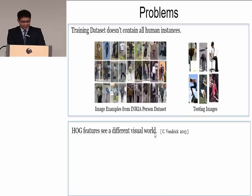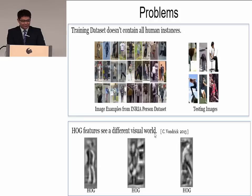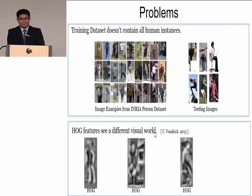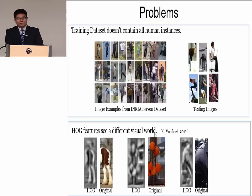The second problem is that HOG features see a different visual world, and most detectors use HOG features. One work has shown some images of the HOG feature visualization. We can see they look like humans, but the original images are not humans. So this means the HOG feature is not always reliable.